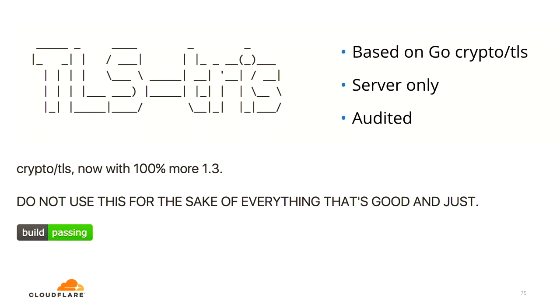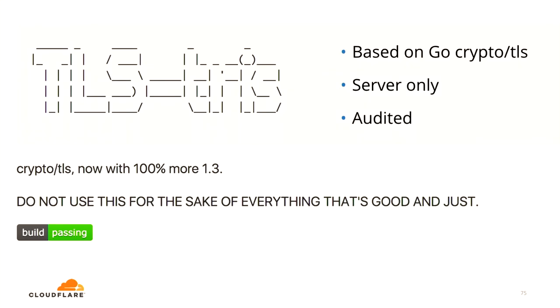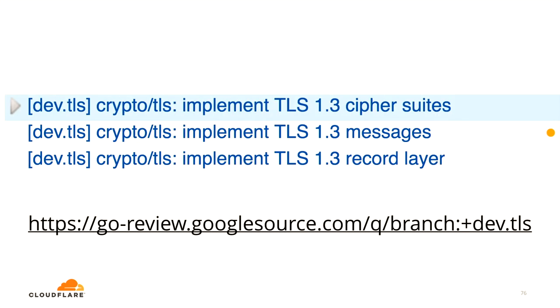The result is called TRIS — a drop-in replacement for crypto/TLS, with a warning not to use it in production. It's been audited for security, but stability is still a concern. Work is ongoing to upstream it into the Go standard library; it won't hit Go 1.8, but they're looking forward to upstreaming it.